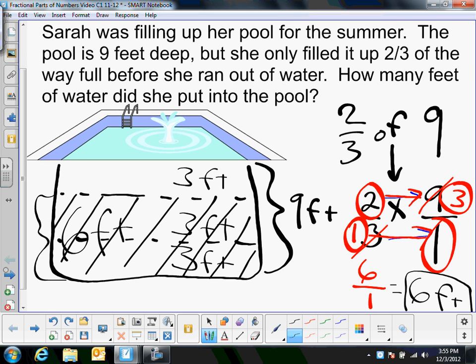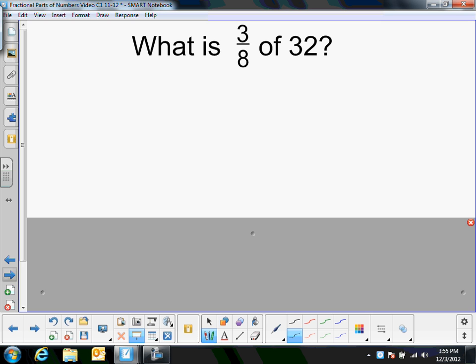So that's basically how you do it. I'm going to go through a couple examples, and you can pause it and fast forward or rewind, whatever you need to do. So here I have, what is three eighths of 32?